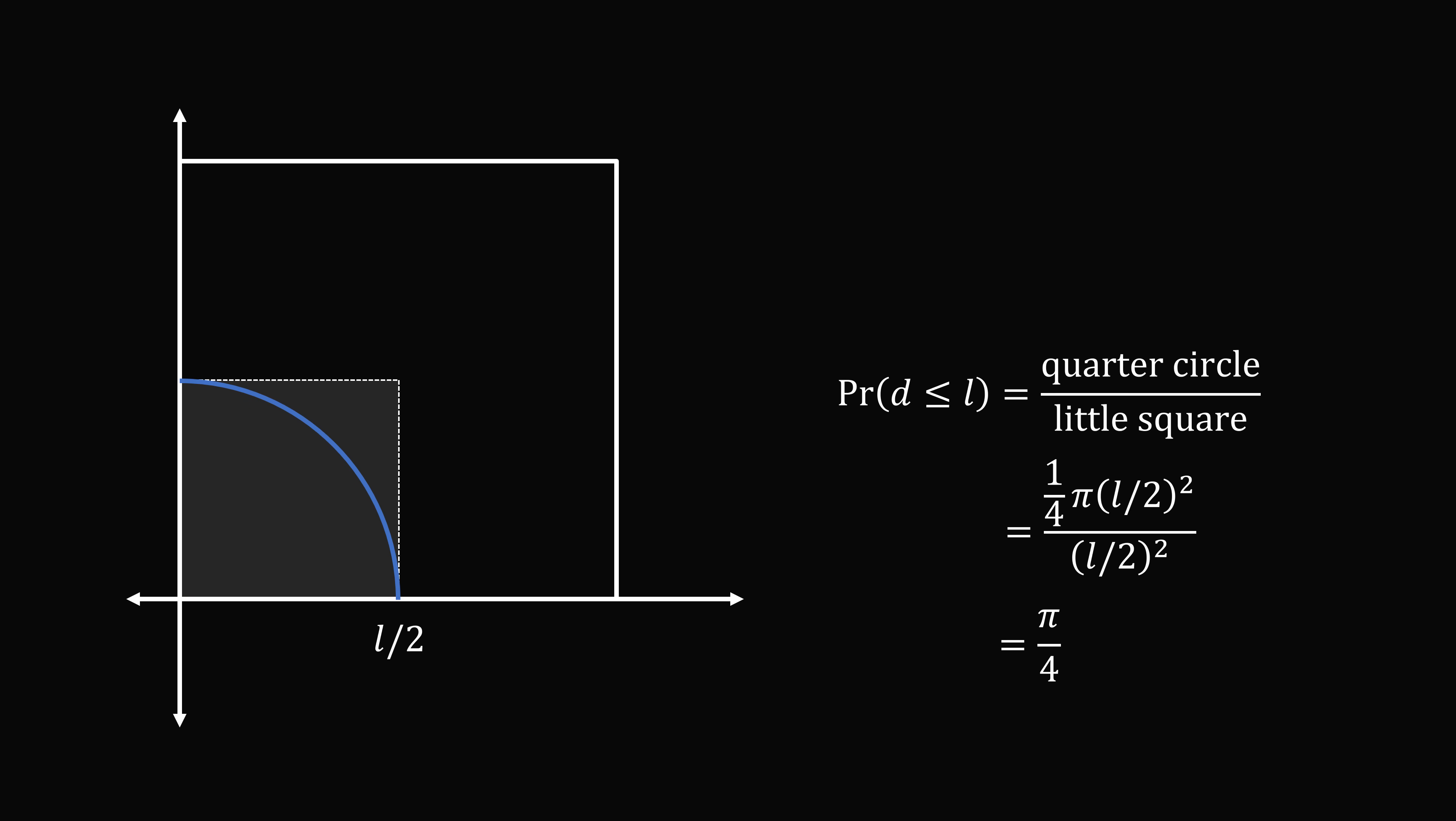But remember, we want the probability that D is greater than L. So that will be the remaining area. So the probability that D is greater than L will be the complement event. So this works out to be 1 - π/4. So we're now ready to do the final calculation.